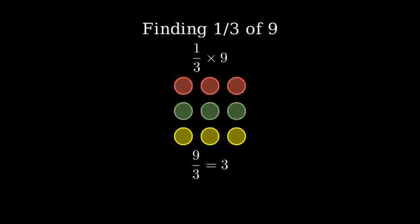Let's count how many circles are in one group. One, two, three. So one-third of nine is three.